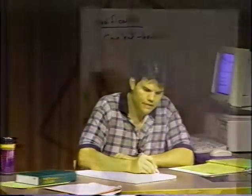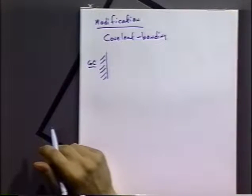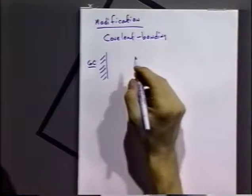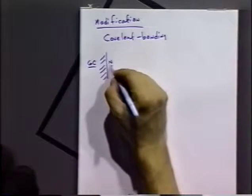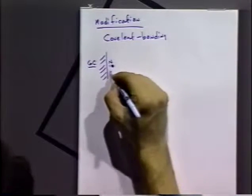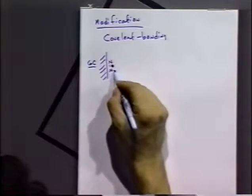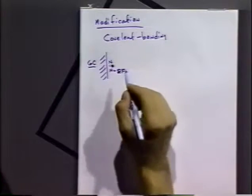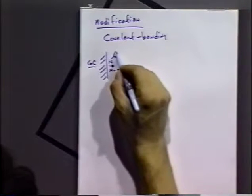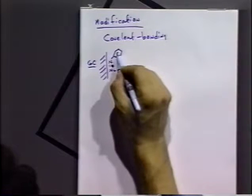But it turns out there's another method that's just been developed a few years ago by a French electrochemistry group led by Savéant, who's a very famous electrochemist. He suggested the following method: if you take a glassy carbon electrode — and it probably would work for almost any carbon — he used a material which is a diazonium salt. He started out with the nitro group, the nitrophenyl diazonium.